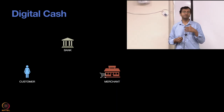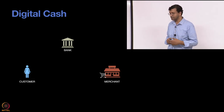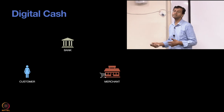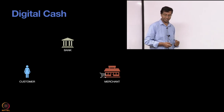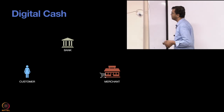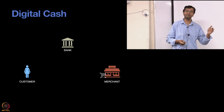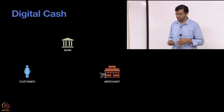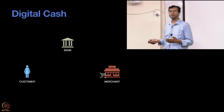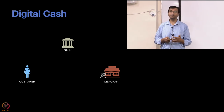Digital cash is mainly for doing transactions — buying things. There is a customer who wants to buy things from some merchant and pay cash for it. The cash comes from some bank. The cash kind of goes back to the bank — the merchant will deposit their money back in the bank. The bank maintains accounts for all these people, and they withdraw cash from this account and deposit it back.